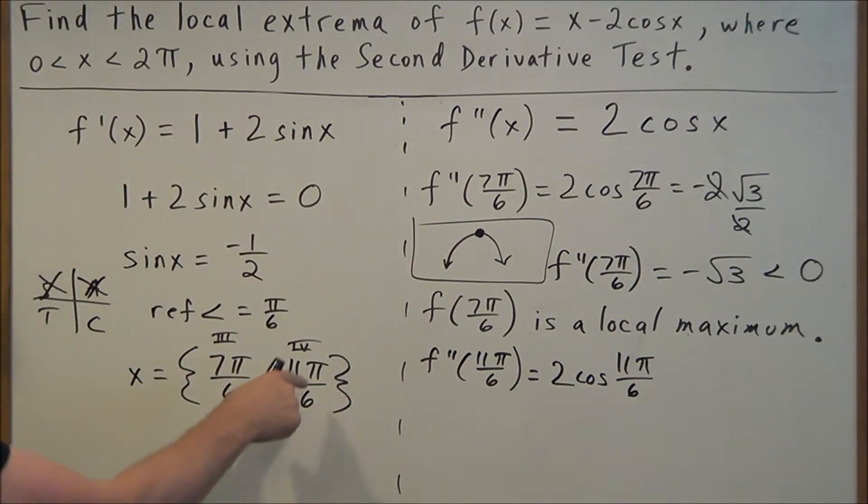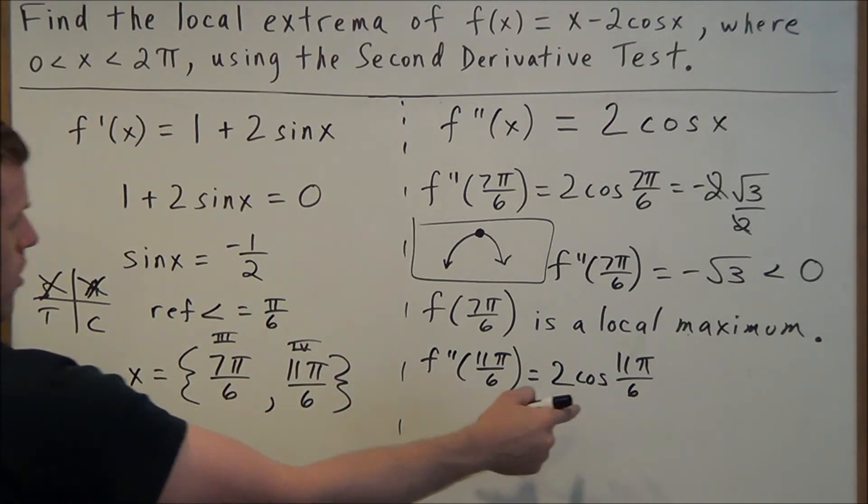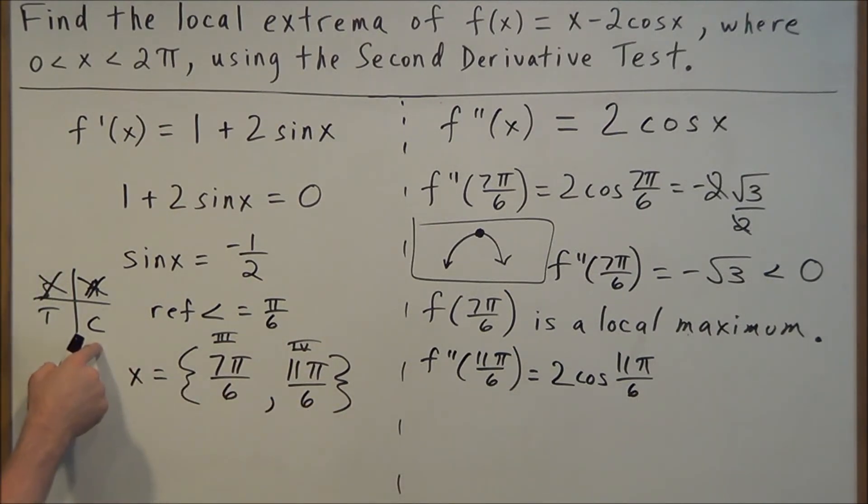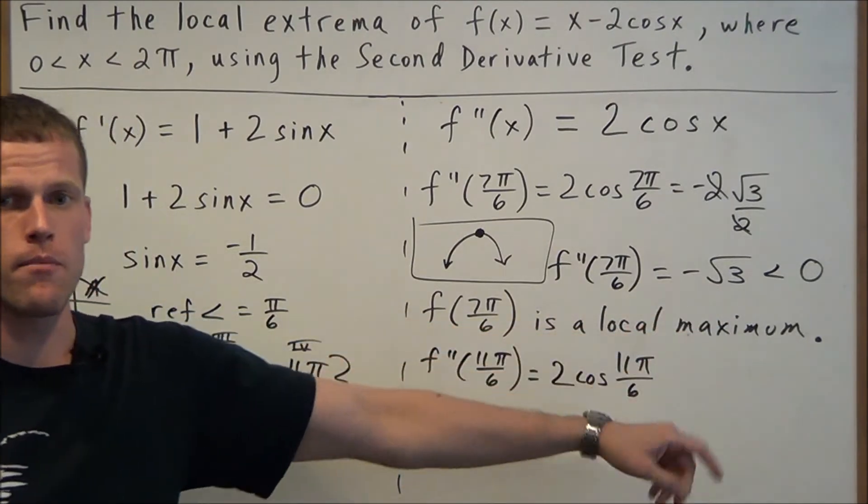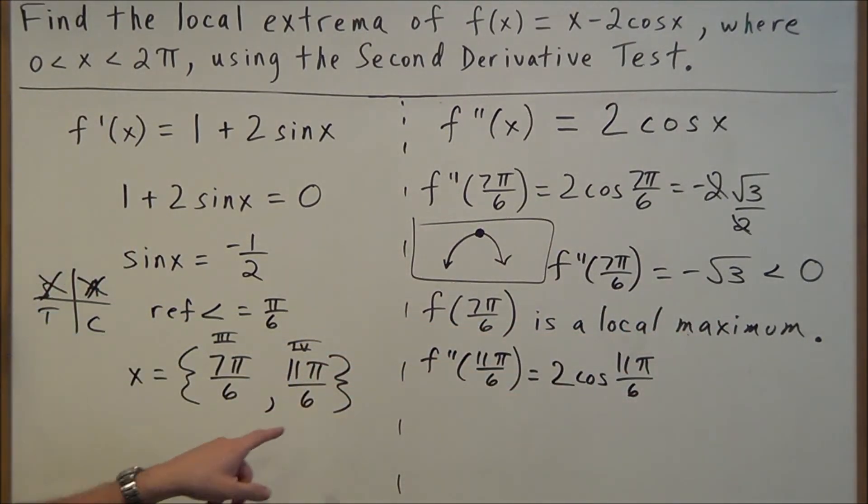And this time around, we have a quadrant 4 reference angle here. I'm sorry, we have a quadrant 4 angle. And in quadrant 4, cosine is positive. So we're going to get this same exact numerical answer here, except this time our answer is going to be positive because we're in quadrant 4 where cosine is positive.